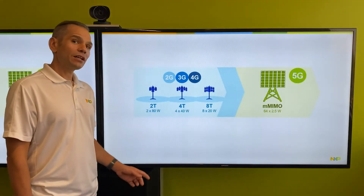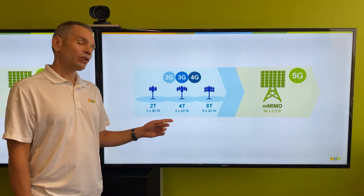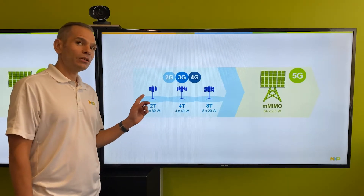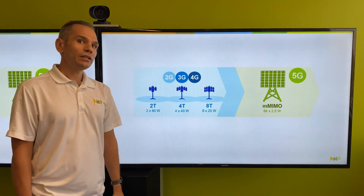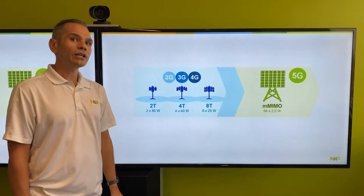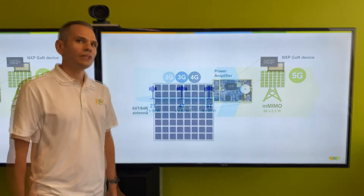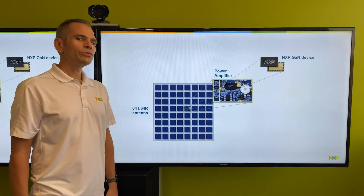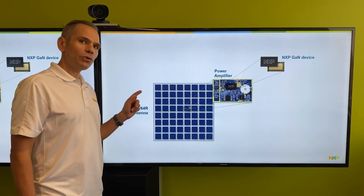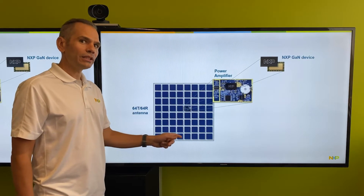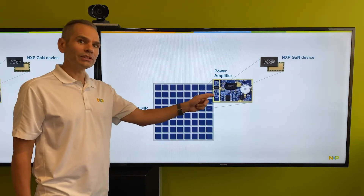Today's cell towers have changed quite a bit over the years. They've gone from lower antenna count to higher antenna count. This higher antenna count brings you faster and clearer signals. 5G radios have up to 64 antenna elements, each one containing a power amplifier module such as this one here.